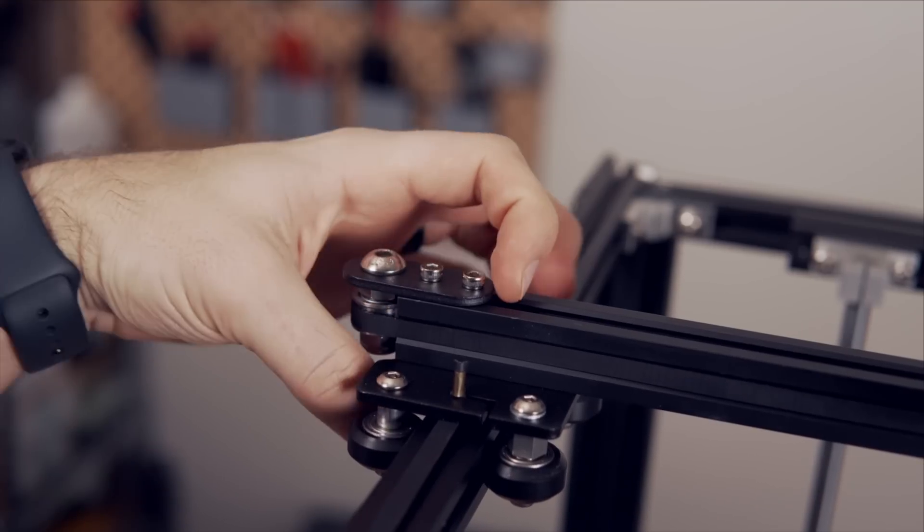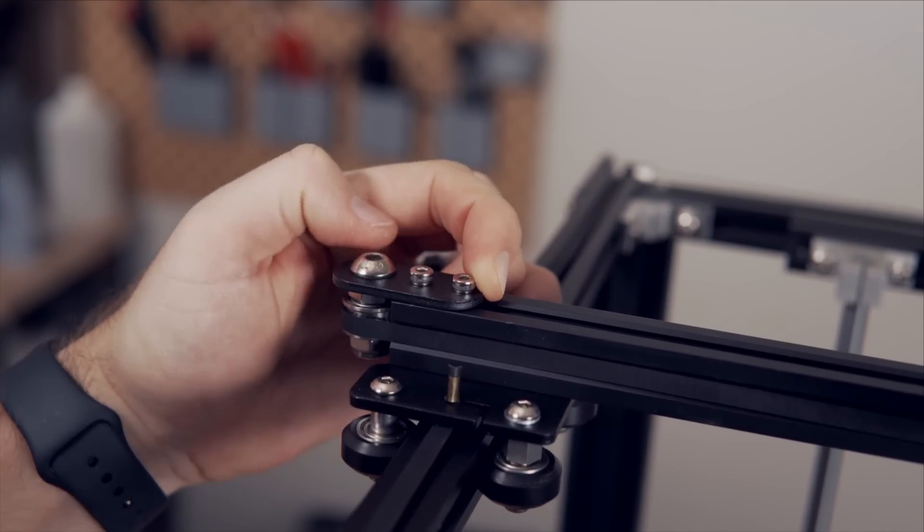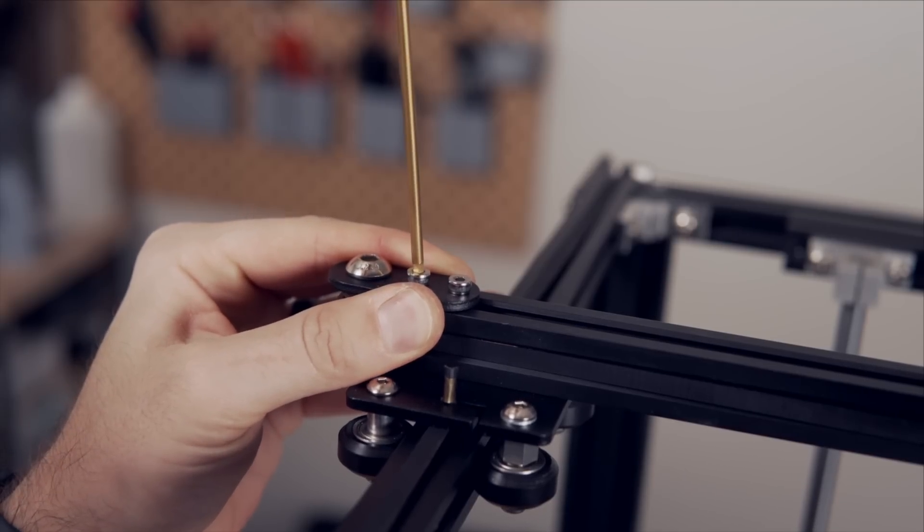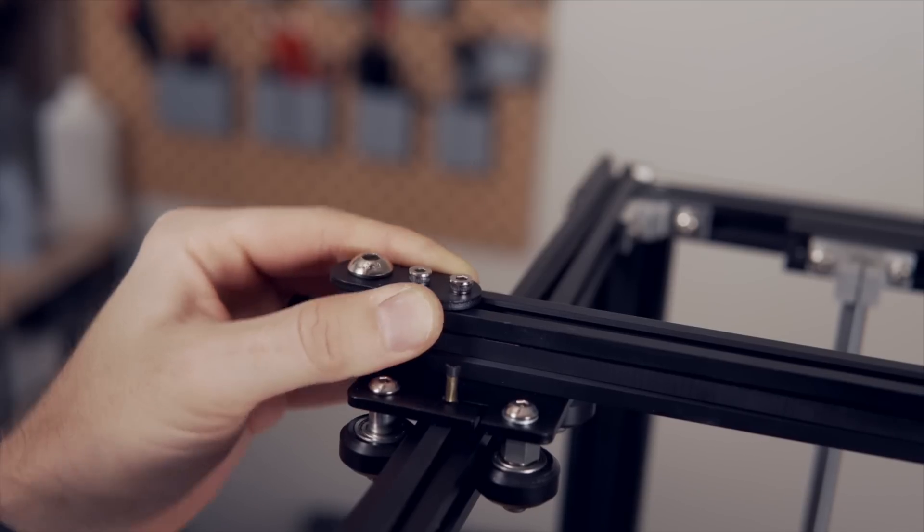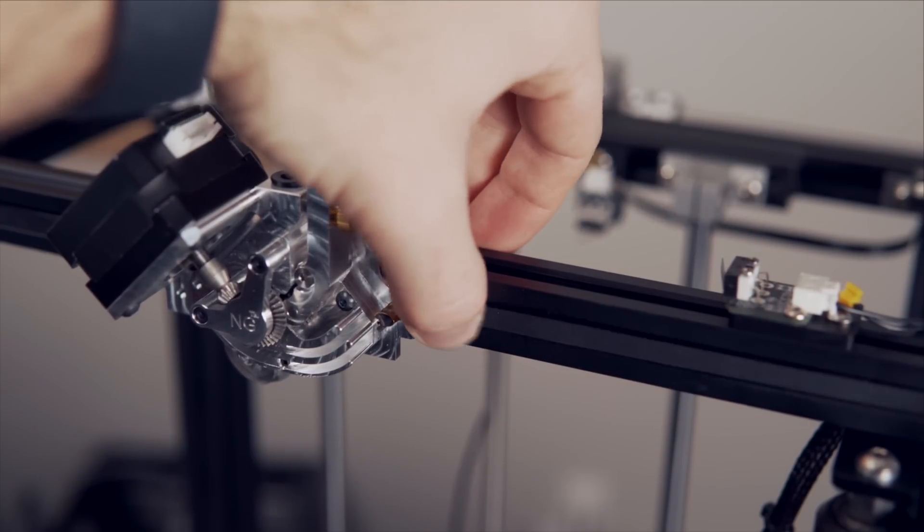Next, we need to tighten the X belt tensioner. This is what we loosened earlier. I just use one hand to pull a little bit away, which generates some tension on the belt, and then tighten those two bolts in place. You don't need insane amounts of tension, just enough so that those belts aren't going to slip, and you're good to go.